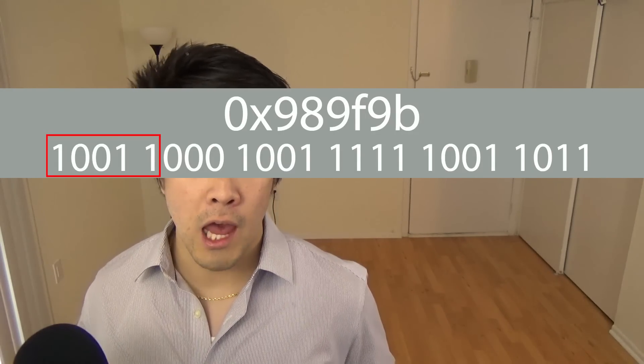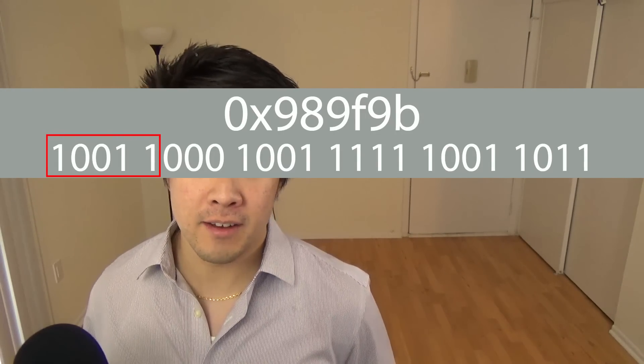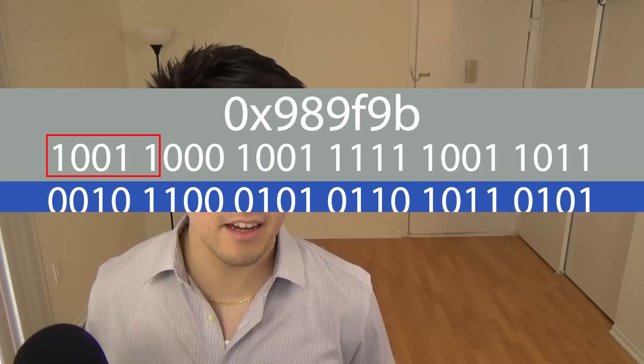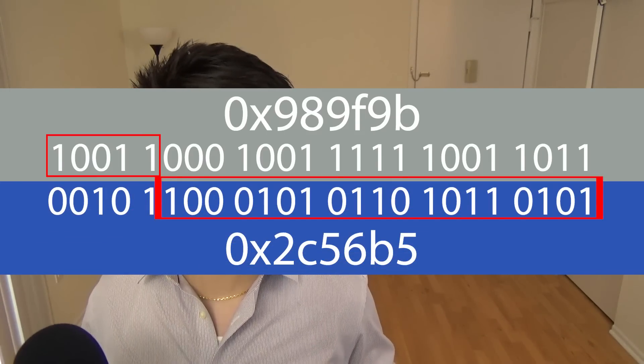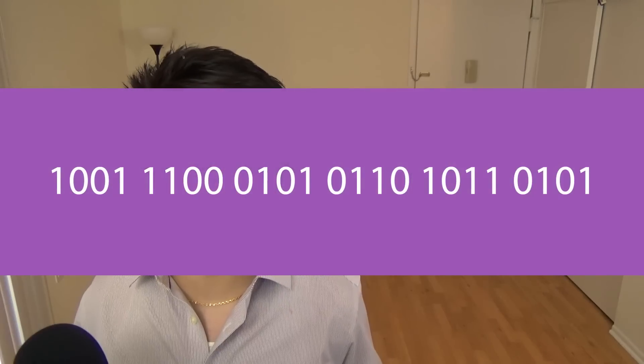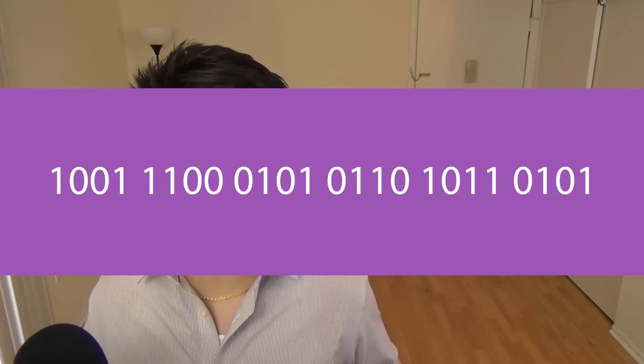Now the second step of the algorithm is that we randomly mate citizens with each other, about 60% in this case. Although that value is also arbitrary. For example, we randomly pick this citizen, and we take the first five bits of it, and then combine it with the last 19 bits of this particular citizen. And once we've achieved 60% mating in this population, we've created a child generation.